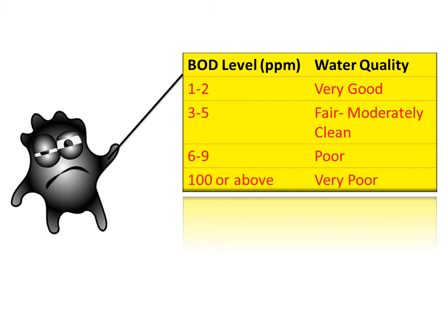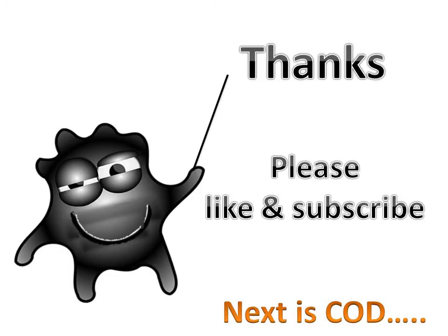If the BOD level is 100 or above, we can say water quality is very poor. Between 6 to 9, water quality is poor. If it is 3 to 5, it is fair. If it is 1 to 2 ppm, it is good. And if it is less than 1 ppm, the water quality is very good. Now we understand what is Biochemical Oxygen Demand.